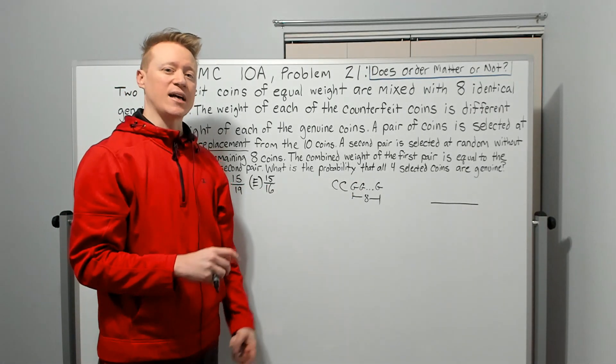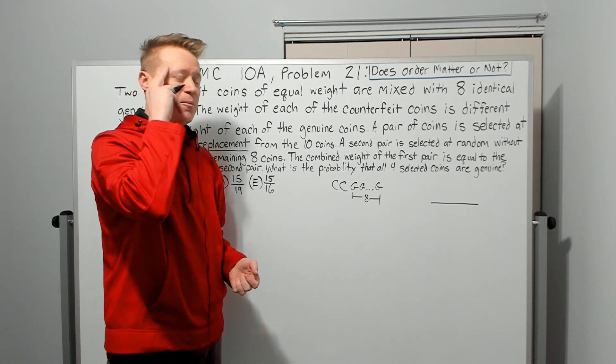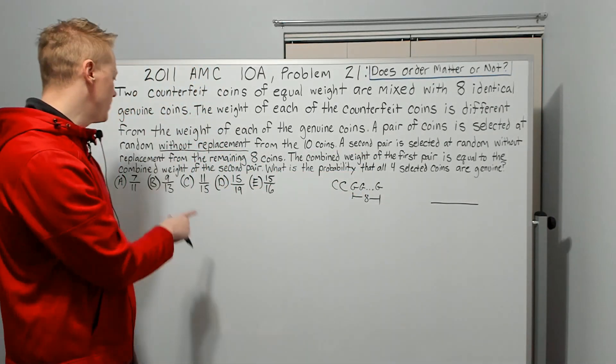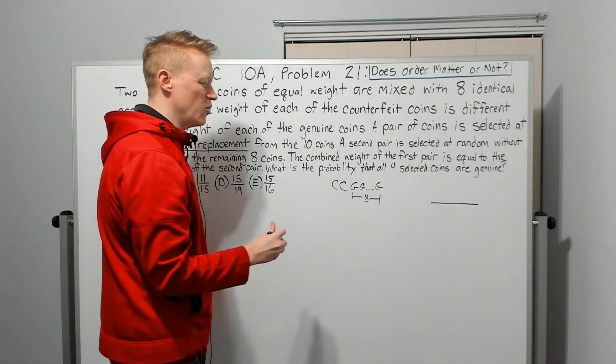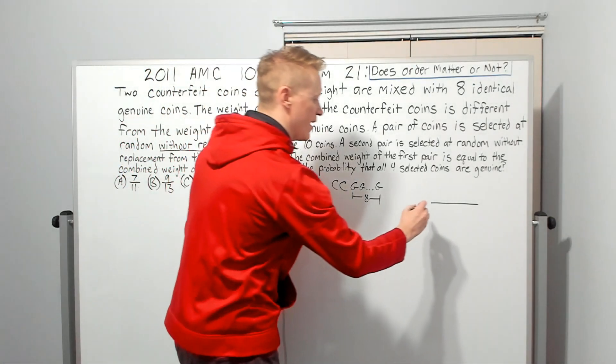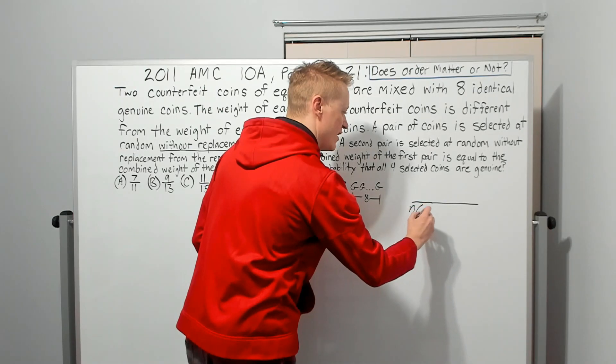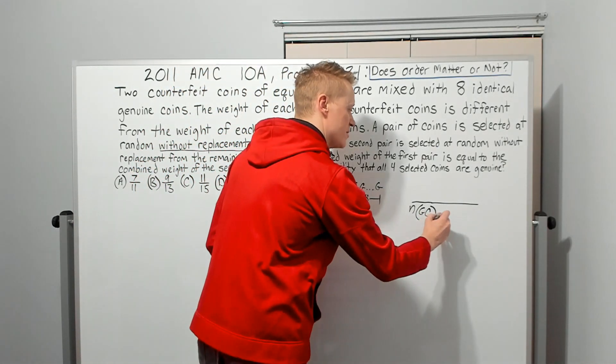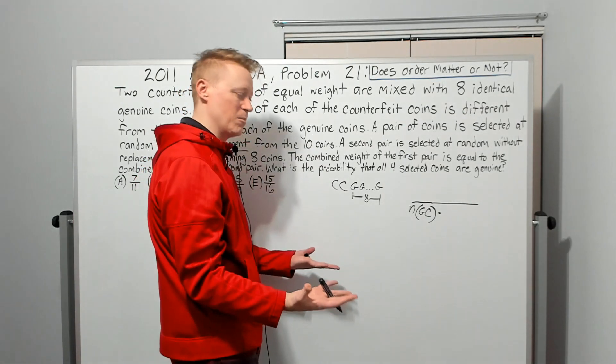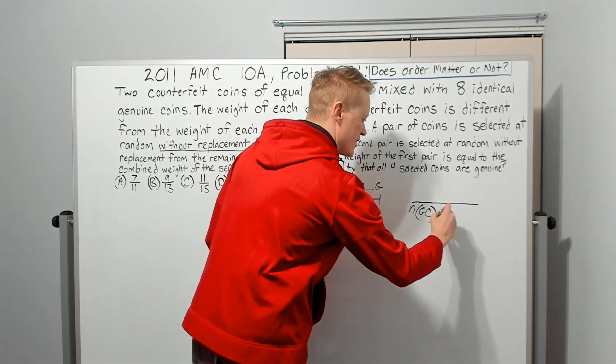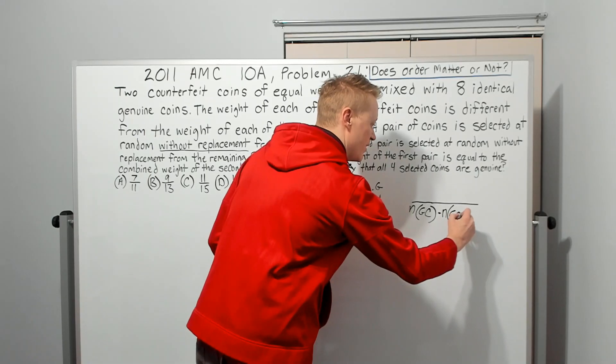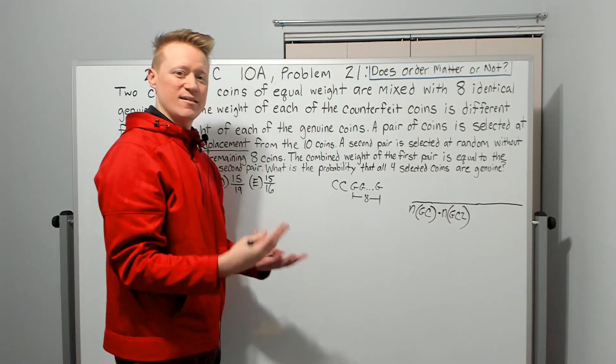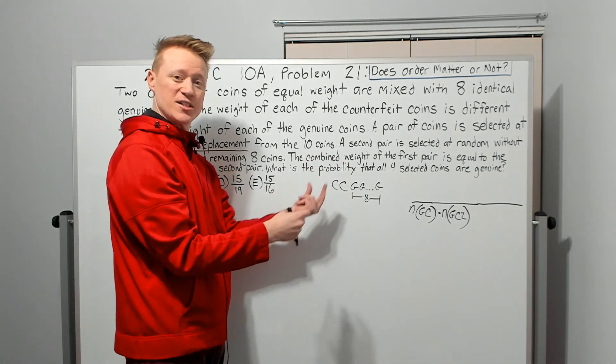Well, you might think it's ten choose two times eight choose two, something like that, right? But however, that's not taking into consideration what they told us. They said the combined weight of the first pair is equal to the combined weight of the second pair. So really there's only kind of two ways that can happen. And we're going to say that the answer we want is the number of ways to get genuine with counterfeit on the first draw of the two coins times, why times? Because of the fundamental counting principle we're counting the number of ways an event can occur. And so then it's going to be times the number of ways of getting genuine counterfeit on the second draw. I've indicated that as gc2, genuine counterfeit two. But that's not the only way you can get two of the same, the same weight, combined weight of the first equal to the second. This is one way.